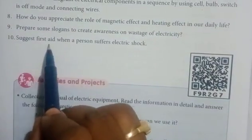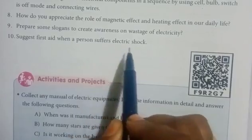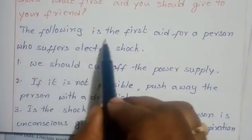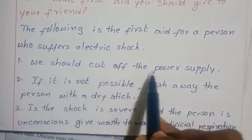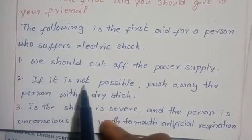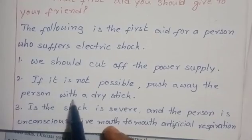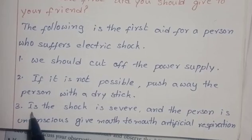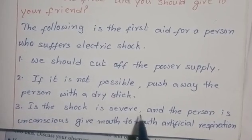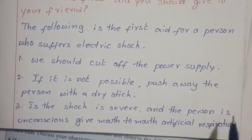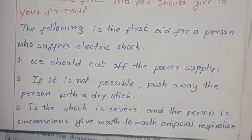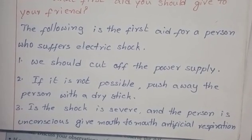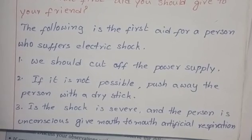10th question: Suggest first aid when a person suffers an electric shock. First, cut off the power supply. If not possible, push the person away with a dry stick. If the shock is severe and the person is unconscious, give mouth-to-mouth artificial respiration. Thank you children — please stay tuned, share, and subscribe to our channel.